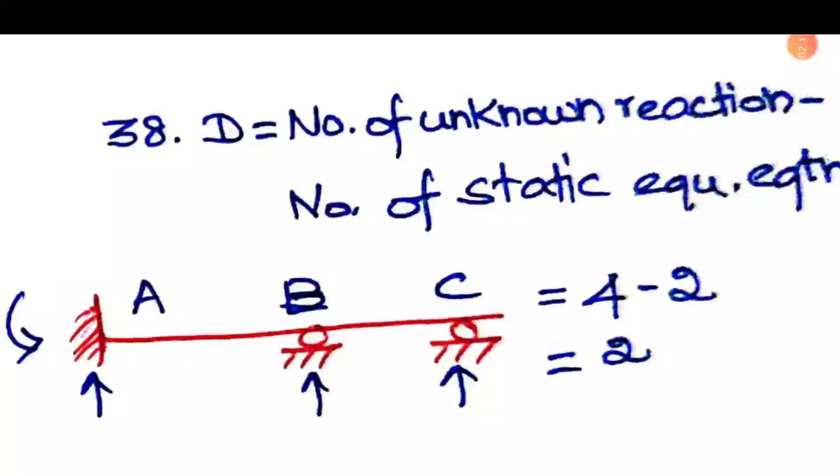Degree of redundancy equals number of unknown reactions minus number of static equilibrium equations. As this is a beam, you have to neglect the horizontal reactions. If you neglect horizontal reactions, you'll have only vertical reactions and moments.